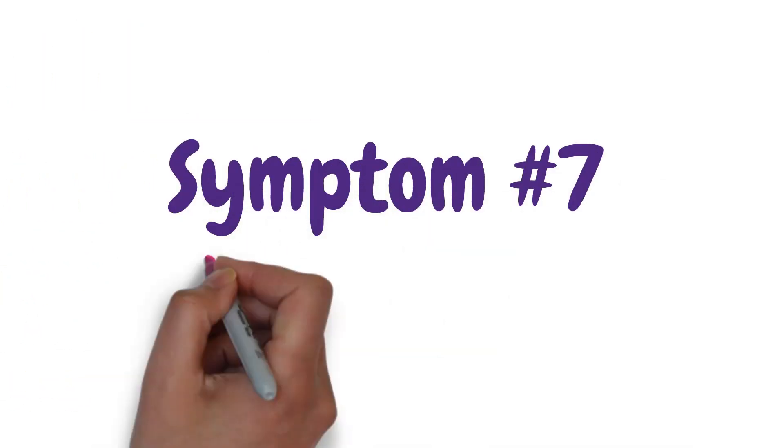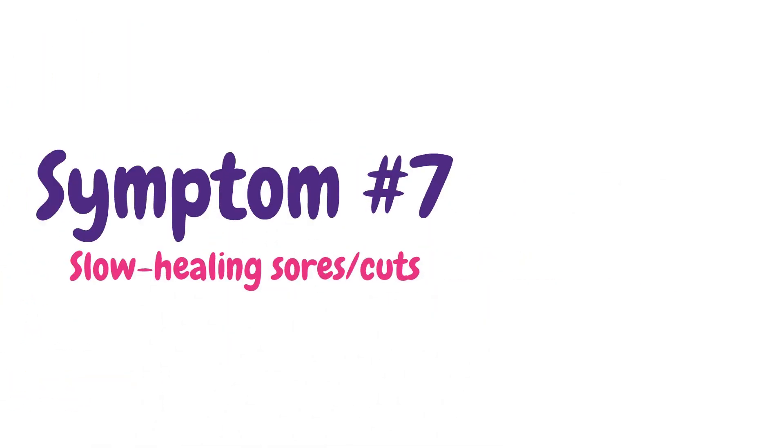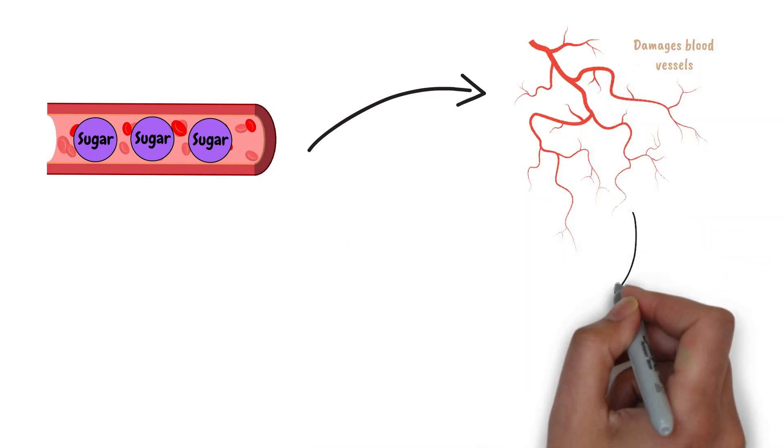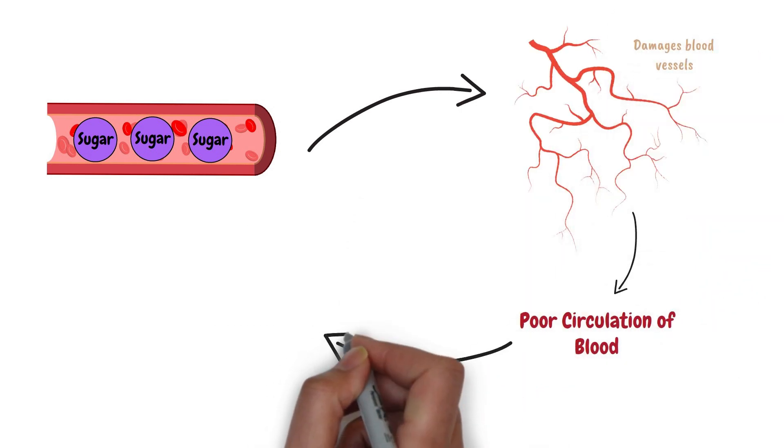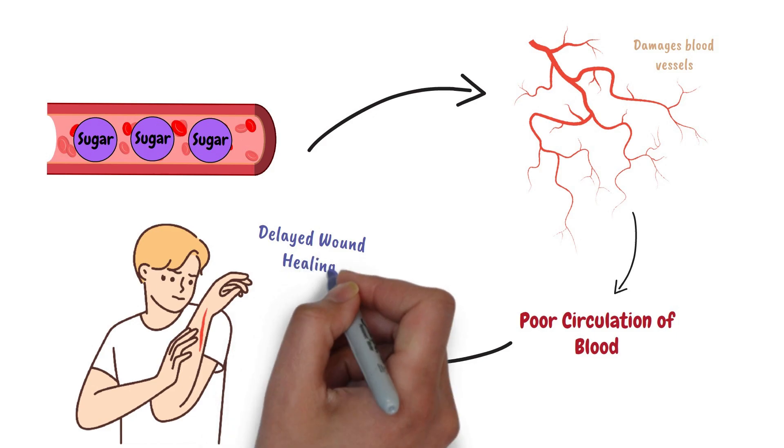Symptom number 7 is slow healing sores or cuts. High blood sugar damages blood vessels, which reduces the amount of blood reaching the wound. This results in delayed wound healing.